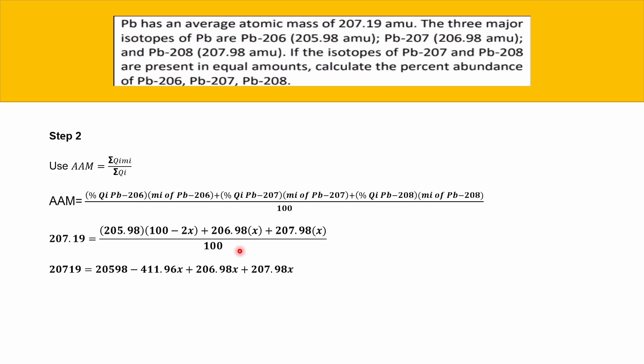Now we need to move all constants to one side and all x terms to the other, isolating numbers without variables from numbers with variables. This gives: 20,719 − 20,598 = −411.96x + 206.98x + 207.98x.